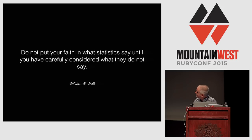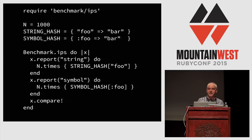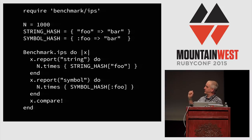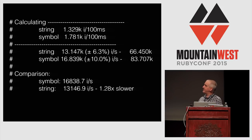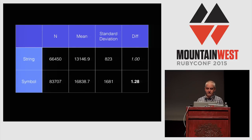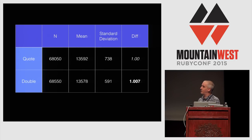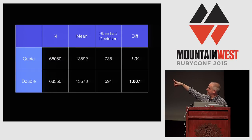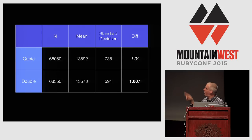Next we're going to talk about inferring things from statistics — this is where statistics get fun. Benchmarks: has everybody done benchmarks with the benchmark or benchmark IPS gem? I'm benchmarking string versus symbol lookups into hashes just as a simple example. Clearly one is faster and one is slower. Then I did the same thing with single quotes versus double quotes — they're so close I have to go out one more decimal place to see if it's any different. One is a fraction of a percent faster. The question is: are those really different statistically?